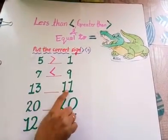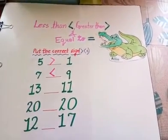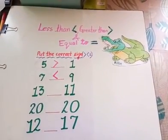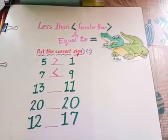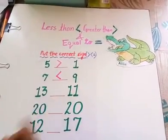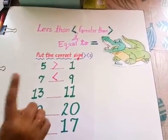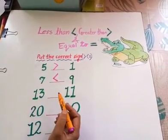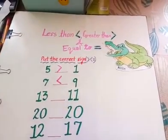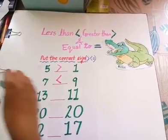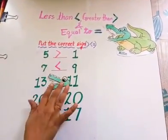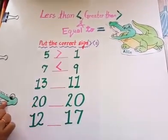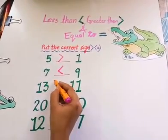Number 13 or number 11? Tell. That's right, Ellie will eat number 13 because 13 is bigger than 11. So for greater than, we use this sign.